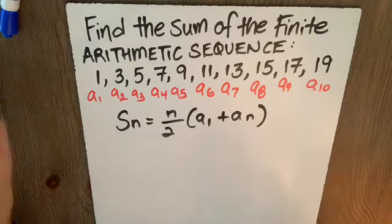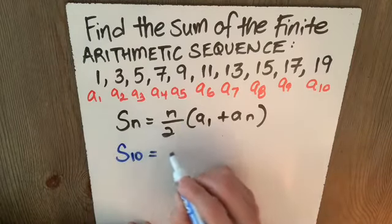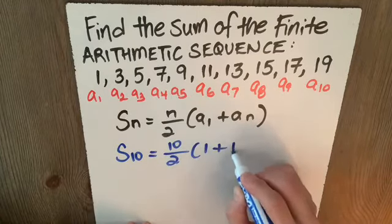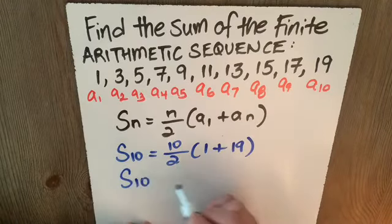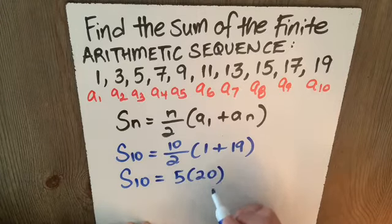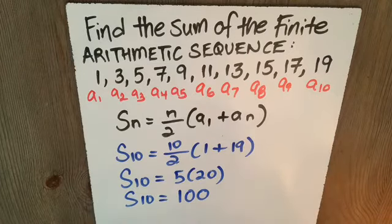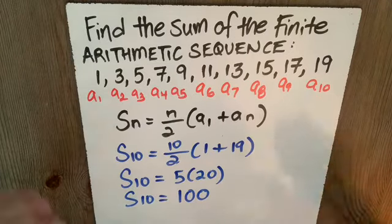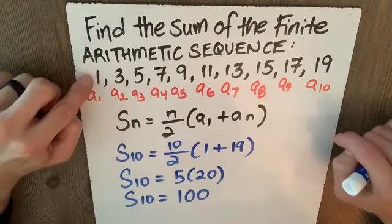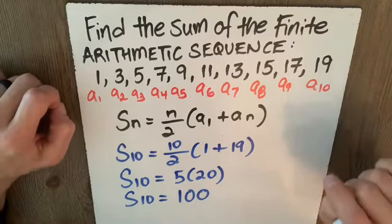So I can plug and chug into this and say, the sum of 10 terms will be 10 over 2 times first term plus last term. So the sum of 10 terms is 5 times 20. The sum of 10 terms here, of course, will also give us 100. Why did that work so well? Because I knew that there were 10 terms, so I satisfied n. I knew A₁ was 1. And my 10th term in this case, my last term is 19.